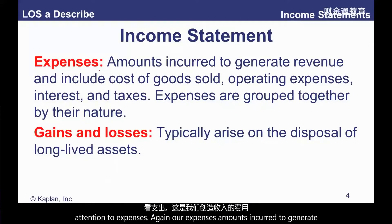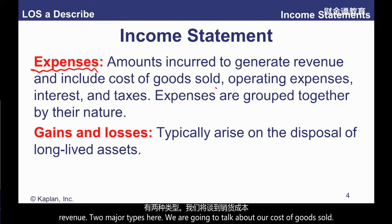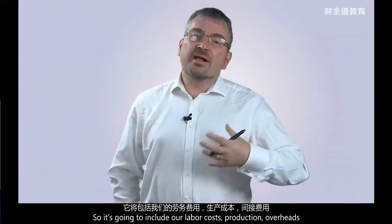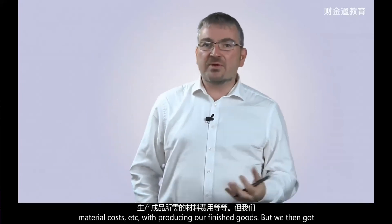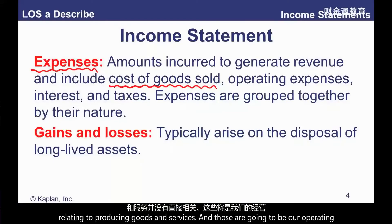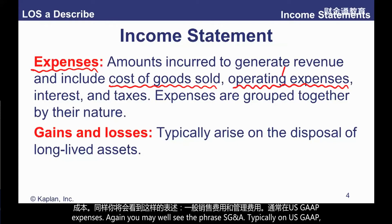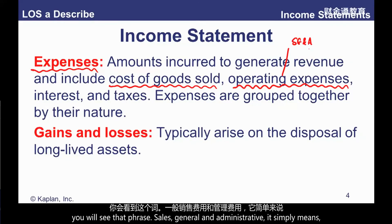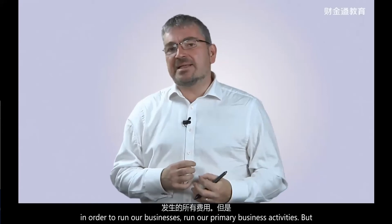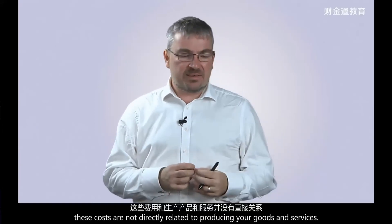We then turn our attention to expenses — amounts incurred to generate revenue. Two major types: costs of goods sold, which includes all the costs of manufacturing goods or producing services such as labour costs, production overheads, and materials costs. Then we have operating expenses — costs involved in running the business day to day that are not directly related to producing goods and services. Under US GAAP, you may see the phrase SG&A — sales, general and administrative.